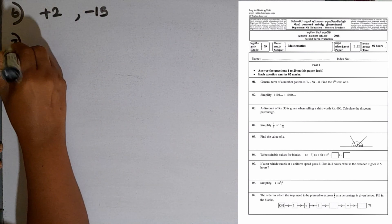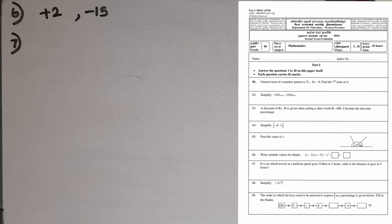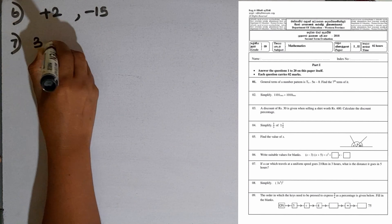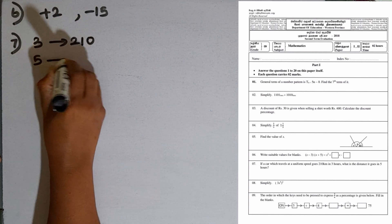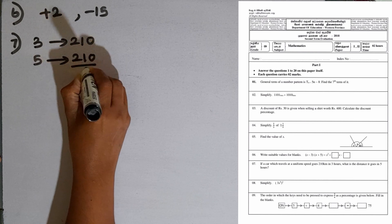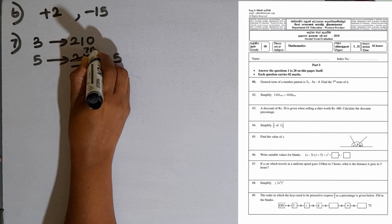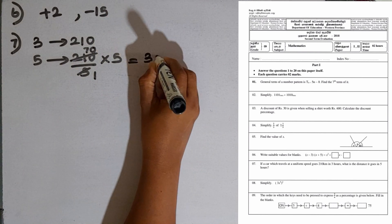Question number 7: a car travelling at uniform speed goes 210 kilometres in 3 hours. What distance does it travel in 5 hours? For 3 hours it goes 210 kilometres. So for 5 hours: 210 divided by 3 multiplied by 5. That is 70 multiplied by 5, which equals 350 kilometres.